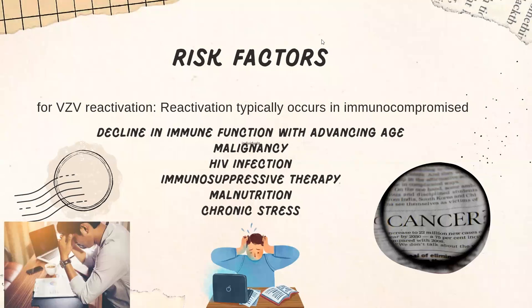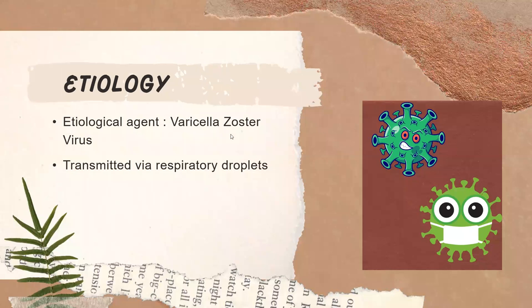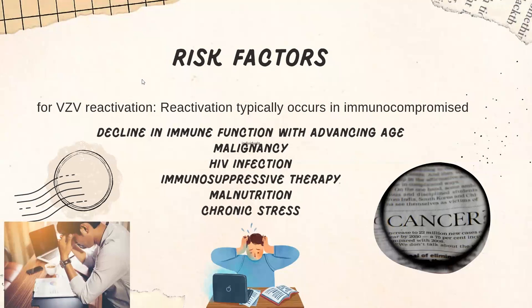So what are the risk factors for acquiring herpes zoster? Herpes zoster is usually an infection that arises as a result of reactivation of varicella zoster virus, and this reactivation typically occurs in the immunocompromised.